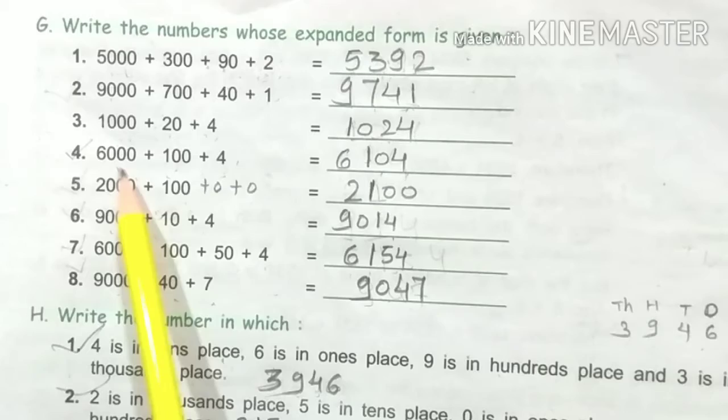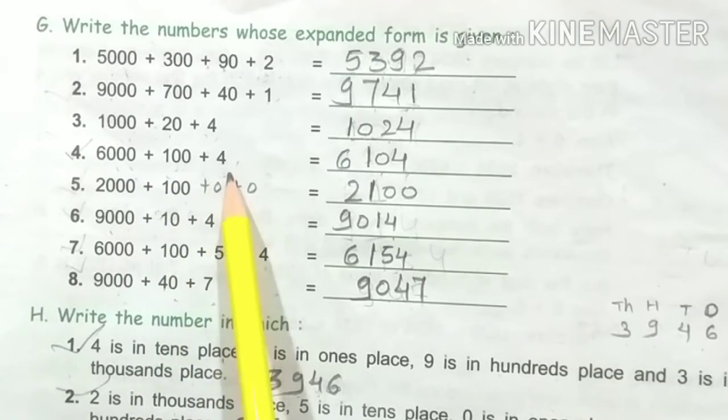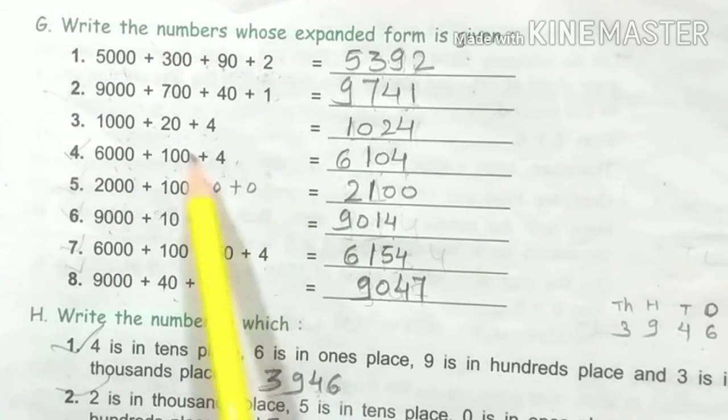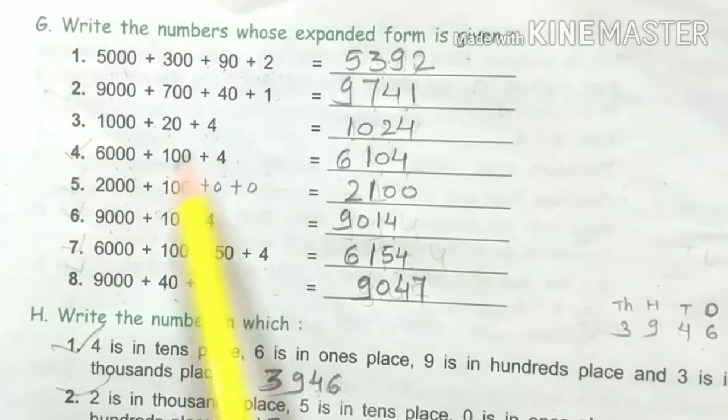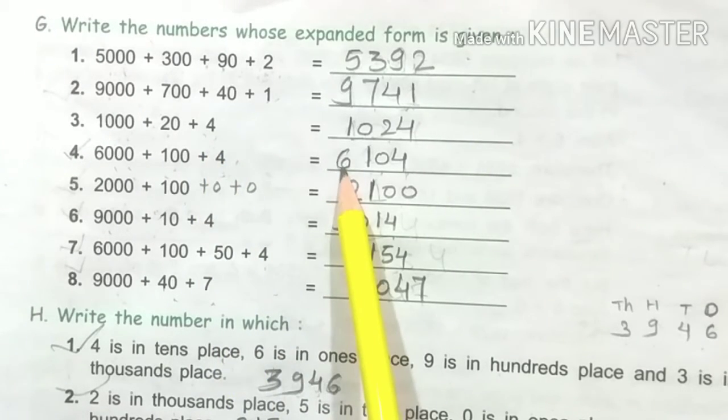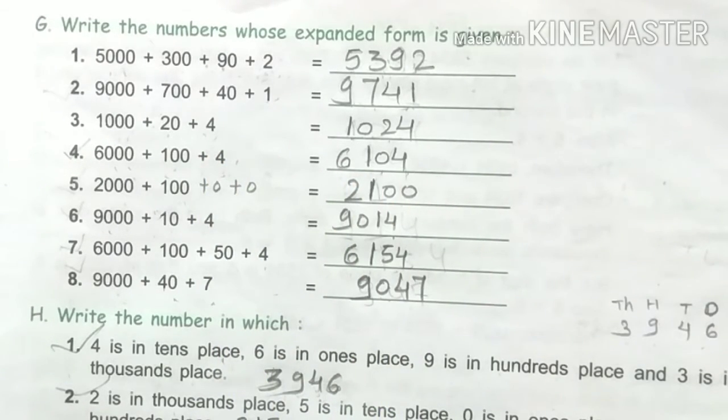6000 plus 100 plus 4. Here we have tens and ones which are missing, so we can write 0 for tens and ones. So, 6104.